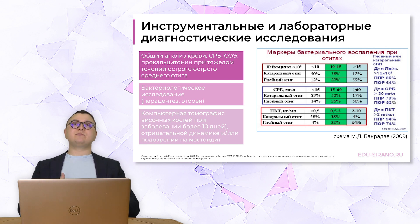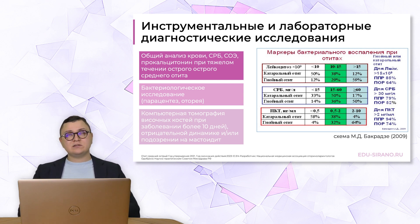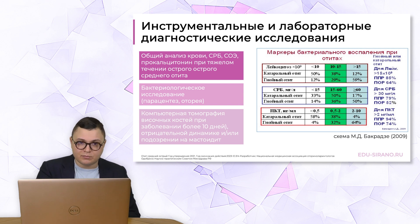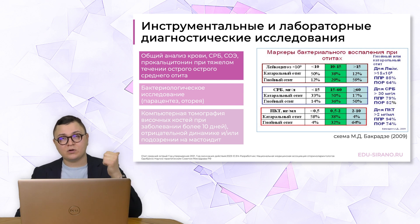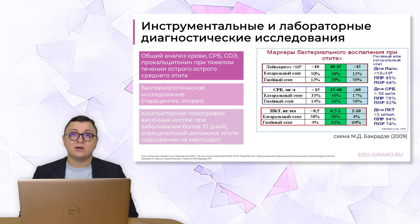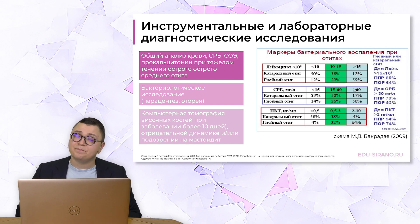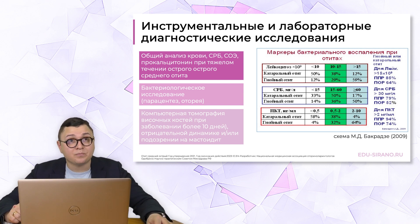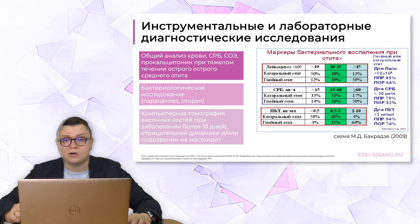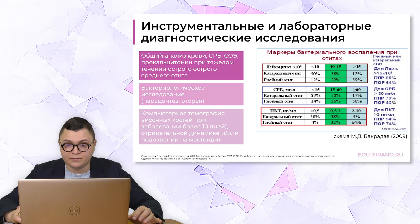Как подтвердить диагноз, когда мы не можем чётко отличить бактериальную форму острого среднего отита от катаральной? Общий анализ крови, прокальцитонин, С-реактивный белок – чувствительные показатели. Прогностическая ценность повышения этих показателей важна для дифференцировки бактериальной формы от катаральной. Посев следует делать только после парацинтеза или в случае гнойного отделяемого в перфоративной стадии, иначе высевается только путевой микробиом наружного слухового прохода. Для исключения осложнений – в первую очередь компьютерная томография височных костей.